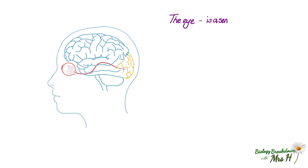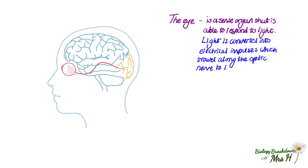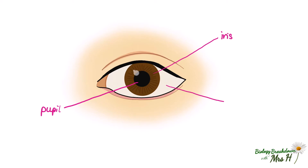The eye is a sense organ that is able to respond to light, which is converted into electrical impulses that travel along the optic nerve to the brain. Looking at the eye from the front, we can see the iris, which controls the size of the pupil. The pupil allows light into the eye, and the white of the eye is called the sclera.